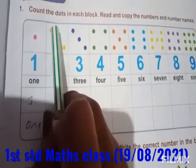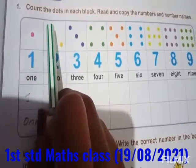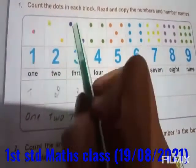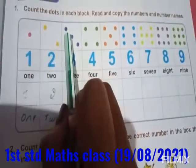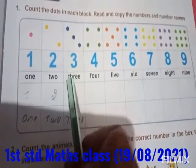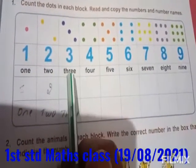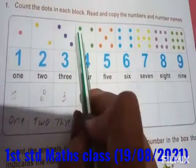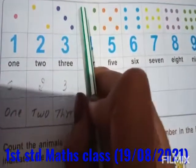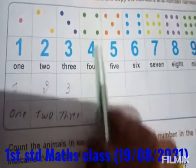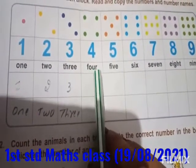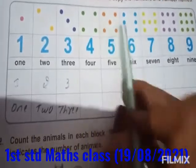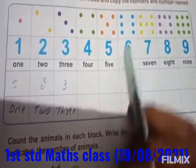In this box, how many dots? 2. T-W-O, 2. Then here: 1, 2, 3. THREE, 3. Number's name, children — that is the number's name in words. Then here: 1, 2, 3, 4. FOUR, 4. Then: 1, 2, 3, 4, 5. FIVE, 5.